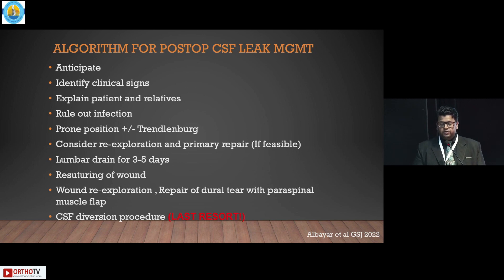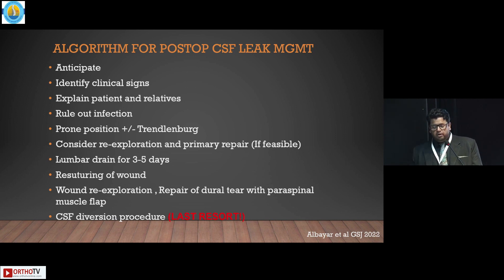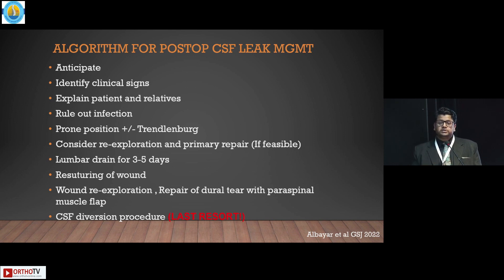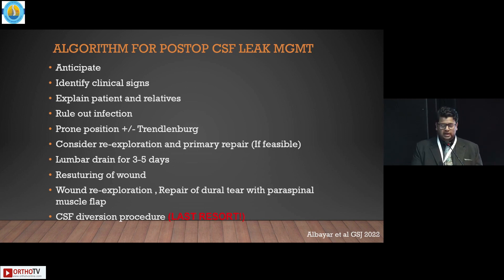This is the last and most important slide — an algorithm for post-operative CSF leak. First, anticipate: know which patient is likely to have a CSF leak post-operatively. Identify the clinical signs. Explain the situation to the patient and relatives. Rule out infection. Consider placing the patient prone, or Trendelenburg position depending on whether it is a cervical or lumbar site of leak. Consider re-exploration and primary repair if you think the dural tear can be sutured. The safest approach is to place a lumbar drain for the first 3 to 5 days, then consider suturing the wound — mainly the fascial layer and skin layer, which can be done under local anesthesia. Wound exploration and repair of the dural tear with paraspinal muscle flaps have also been described to obliterate dead space. CSF diversion procedure is a last resort.